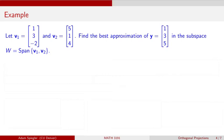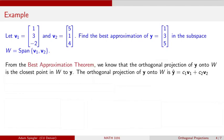The best approximation for y in the subspace W is exactly the same thing as the orthogonal projection of y onto W. Although this question seems different, finding the best approximation in the subspace is equivalent to finding the orthogonal projection onto W — similar to the examples we've just been working with.